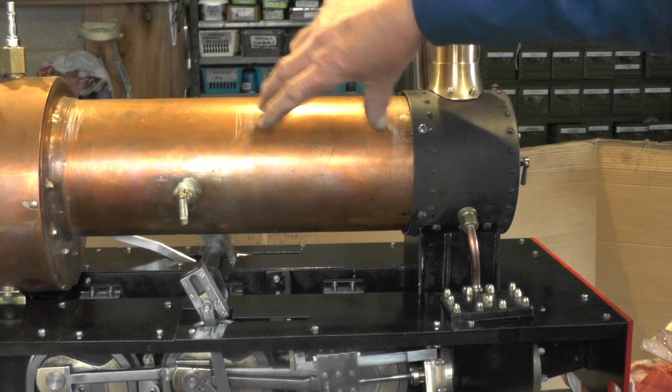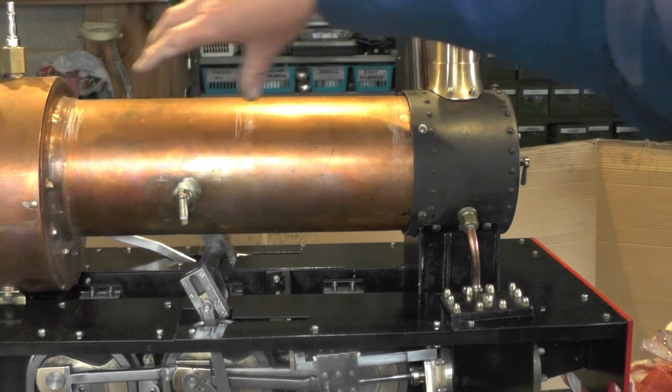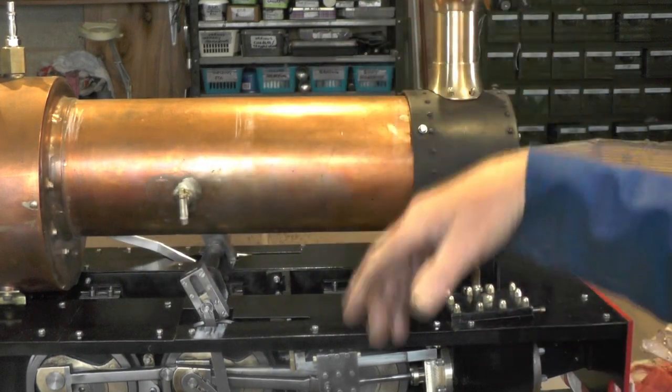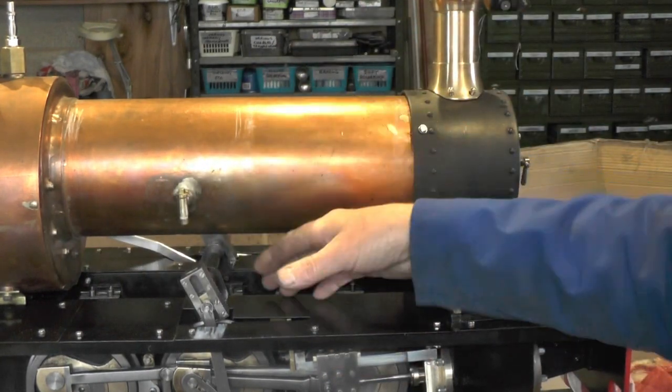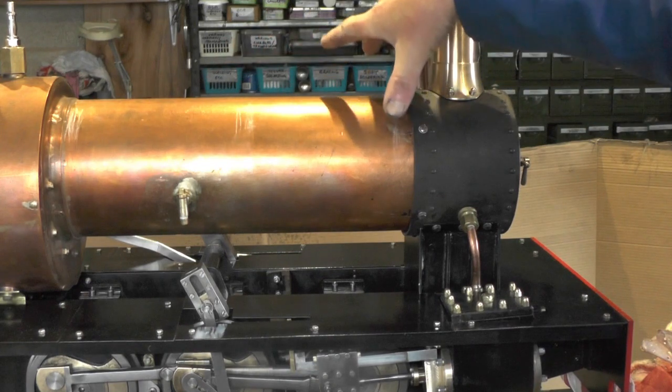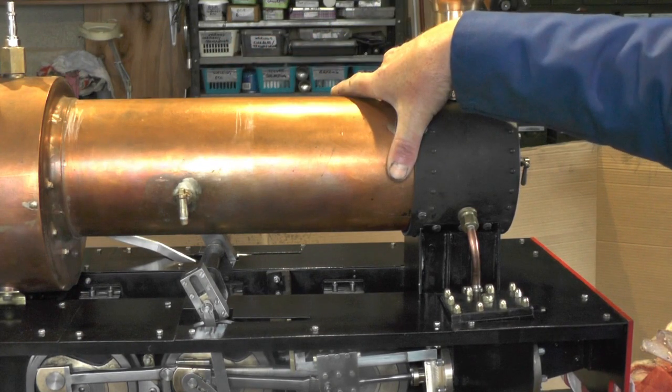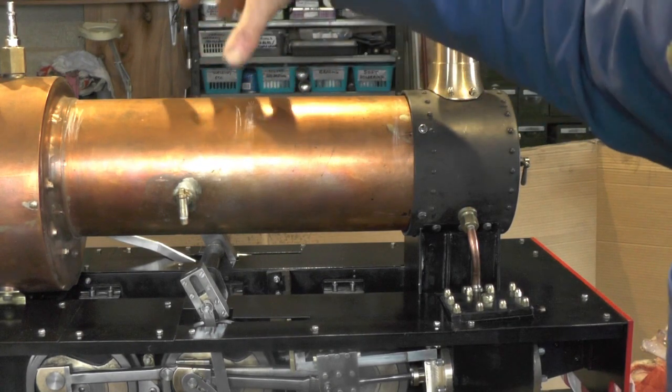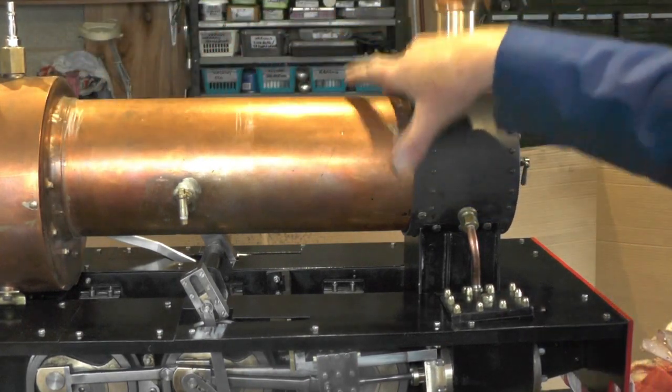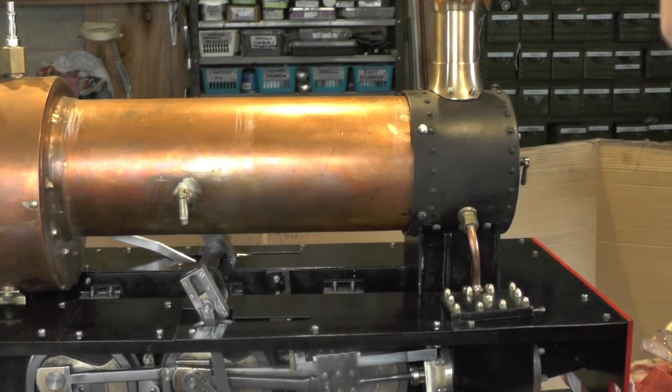In between them bands goes some insulation and then I'll make my outer wrapping which will be painted. Then there'll be three brass bands that will go around and fasten underneath in the bottom.